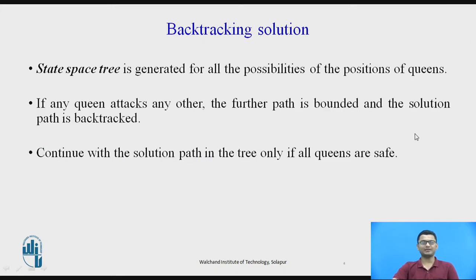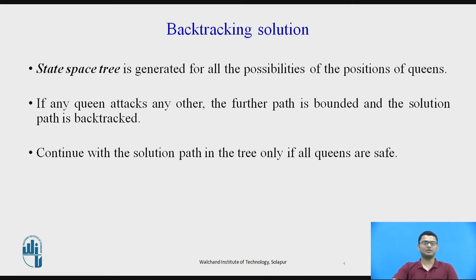So how do we use the backtracking approach to find a solution to the N-Queens problem? In backtracking we generate the state space tree. We will generate the state space tree for all possibilities of the positions of queens. If any queen is attacking or will attack any other queen in the next step, the further path is bounded and the solution path is backtracked. We continue with the solution path in the tree only if all queens are safe and no queen is attacking any other.